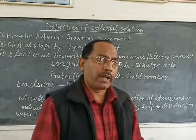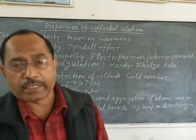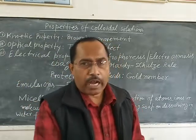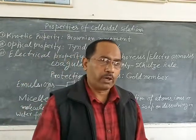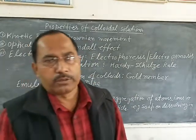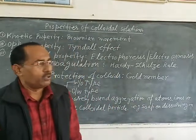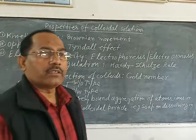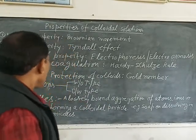As the negative charge increases, the coagulating power of the ion increases. To precipitate or coagulate ferric hydroxide sol, the coagulating power increases from Cl⁻ to SO₄²⁻ to phosphate. This is the Hardy-Schulze rule, a very important rule which explains the coagulating power of an electrolyte or coagulant.